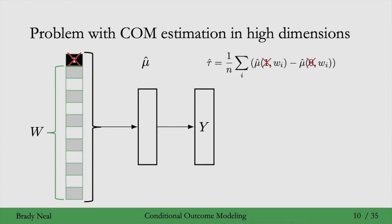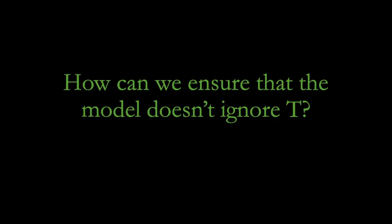So this kind of intuition might lead you to believe that COM estimation can be biased towards zero. So the ATE estimates might be a bit on the small side in absolute value. And in this paper here, they found some evidence for that. So the problem to recap is that our models could ignore treatment leading to estimates of the ATE or CATE that are biased towards zero. This leads us to the natural question, how can we ensure that the model doesn't ignore t?